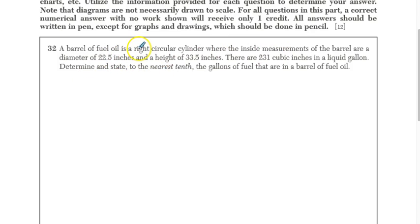Now, this one says a barrel of fuel oil is a right circular cylinder. Where the inside measurements of a barrel are a diameter of 22.5 inches and a height of 33.5 inches. There are 231 cubic inches in a liquid gallon. Determine to the nearest tenth the gallons of fuel that are in the barrel of fuel oil.